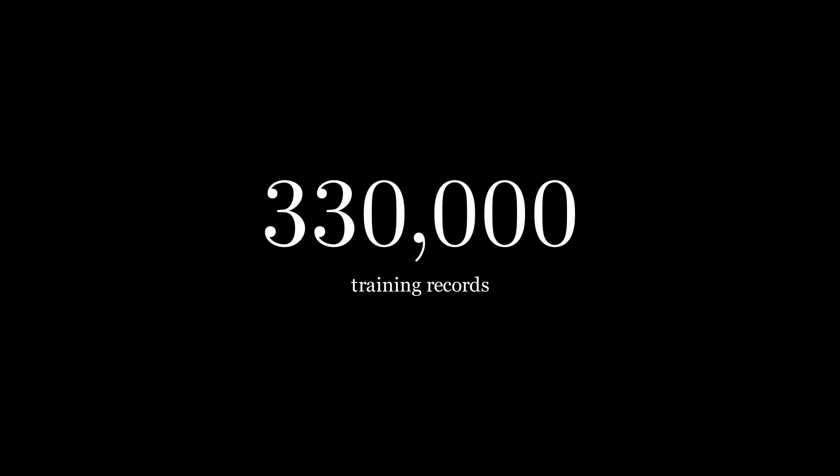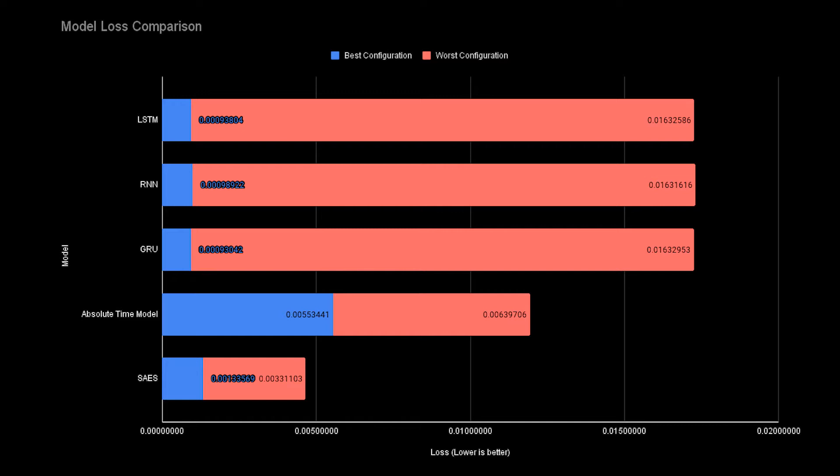Comparing the performance of the models under many different configurations, GRU observed the lowest loss being the most modern version of RNN, whilst the absolute time model observed the worst. This was to be expected as there was simply less data for it to make a prediction from.